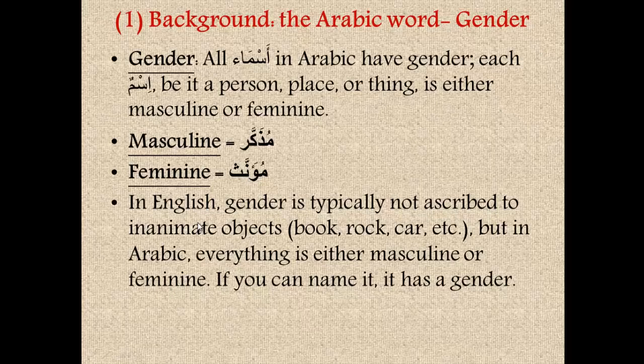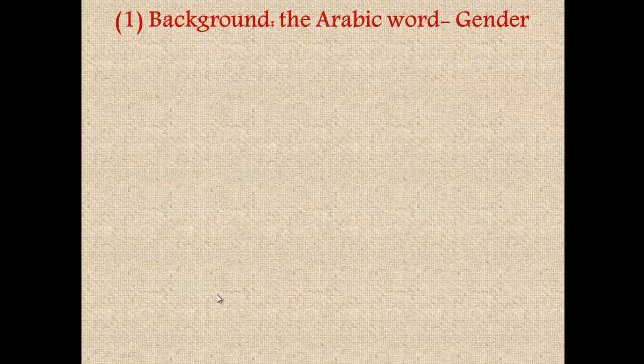We don't typically say in English, 'I picked up a rock, he was heavy,' or 'she was heavy.' We don't say things like that. But in Arabic, everything is either masculine or feminine. If you can name it, it has a gender. So these things — books, rocks, and cars — in Arabic do have a gender.